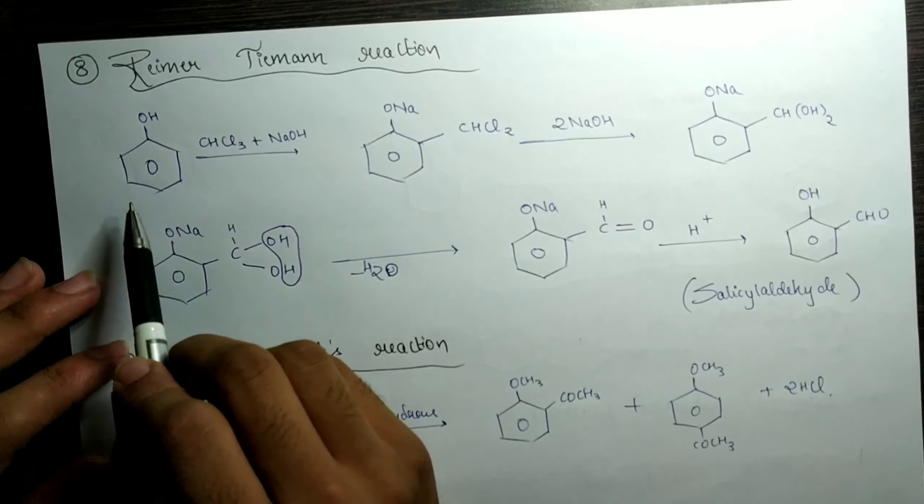The 16th reaction is Clemmensen's reduction reaction. Again I took this mainly to make you remember Zn-Hg (zinc amalgam — amalgam comes wherever you have mercury) along with concentrated HCl. All you have to do is break both the bonds — you have taken four hydrogens: give two to oxygen, which leaves as a water molecule, and give the other two to the carbon. Whether it is a ketone or an aldehyde, it doesn't matter — it works for both. Just break the two bonds, give two hydrogens on each side, and write the final product.